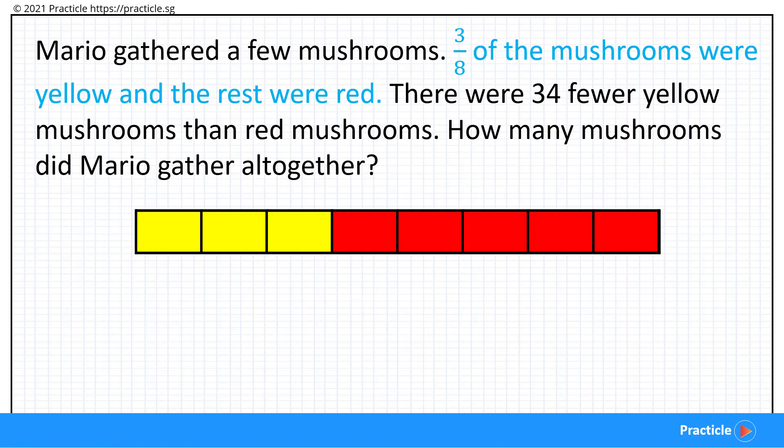Now let's read on to see what else we know. We are given that there were 34 fewer yellow mushrooms than red mushrooms. Alright, so let's compare the number of parts that we have for the yellow and red mushrooms. How many parts do we have for the yellow mushrooms? We have 1, 2, 3 parts, correct? And what about the red mushrooms? How many of those parts do we have? We have 1, 2, 3, 4, 5 parts, right? So what's the difference between the number of parts between the yellow and red mushrooms?